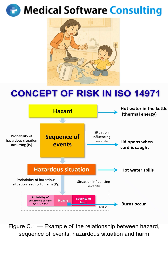At the same time, we also evaluate the severity of the potential harm. ISO 14971 defines risk as the combination of the probability of occurrence of harm and the severity of that harm.